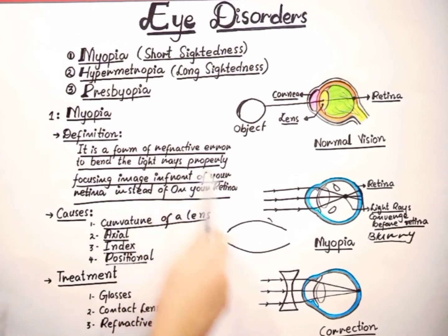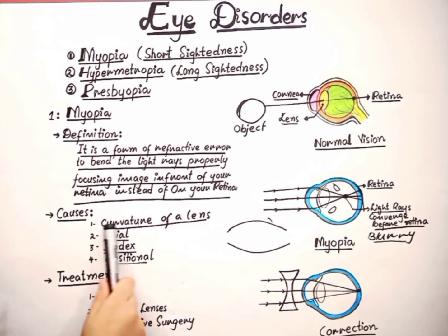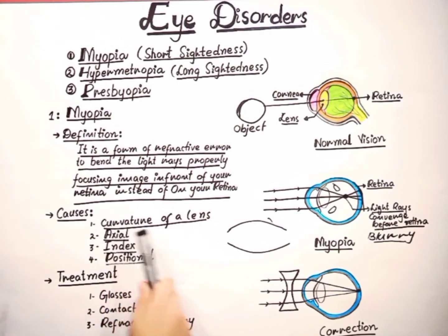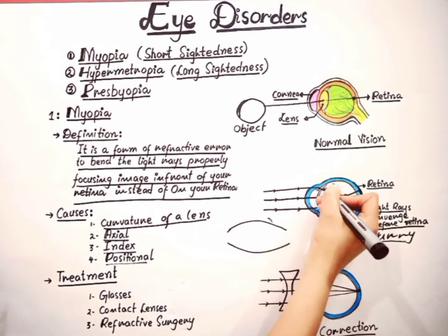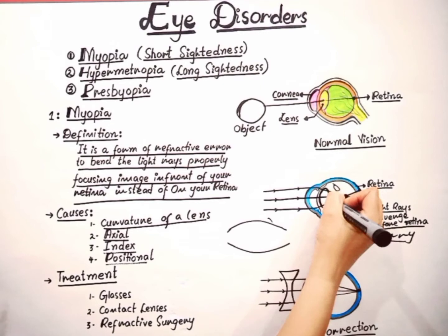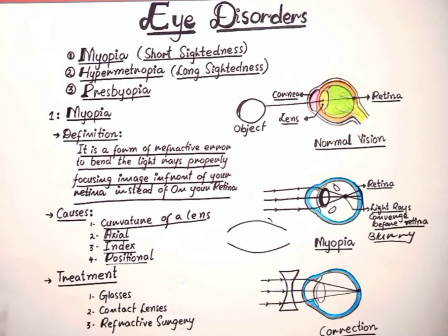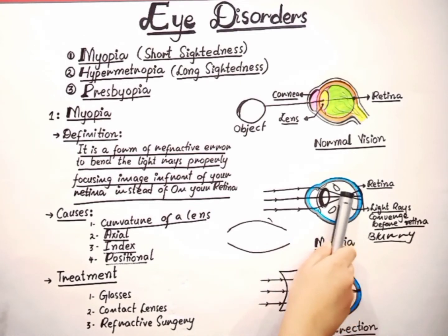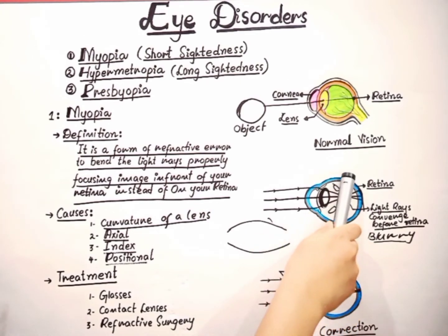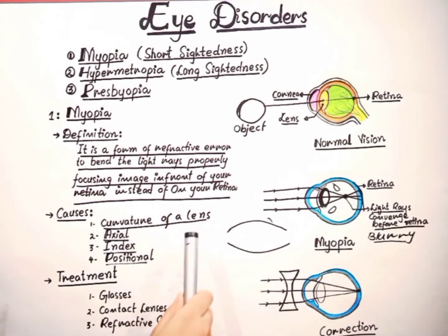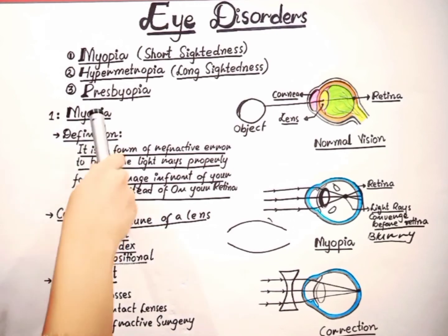What are the causes of myopia? The first cause is curvature of the lens. Curvature means the amount of bend of a lens. The more the curvature, the larger the bend. Whenever the bend is larger, the light rays will focus the image in front of the retina rather than on it. So excessive curvature of the lens is one of the causes of myopia.